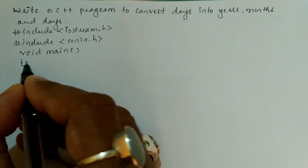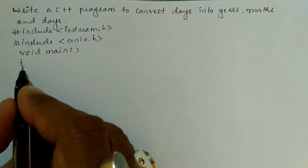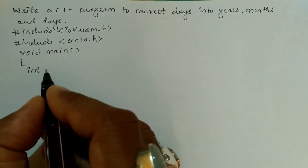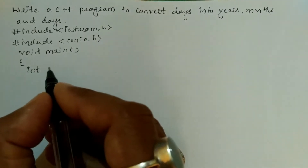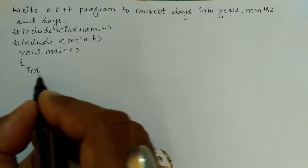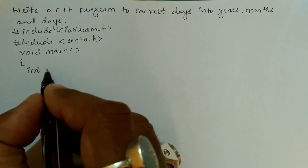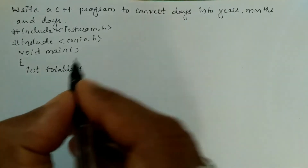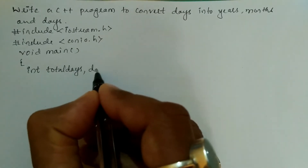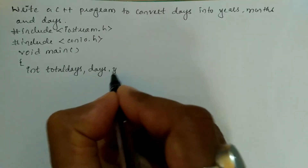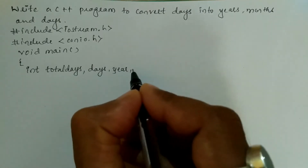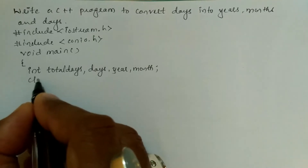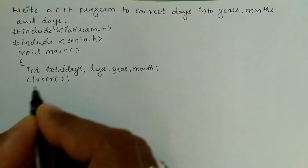Now let us write the void main function. The curly open brace indicates the beginning of the body of the main function. In the declaration section we are going to declare all the necessary variables with their respective data types. Here I will write int, then the variable called total_days, then a comma, then days, then year, then month, and put a semicolon.